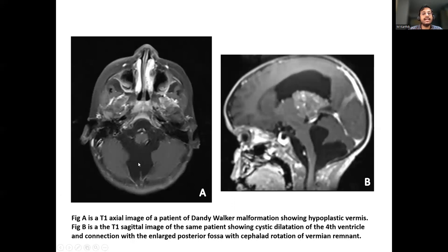A T1 axial image of a patient with Dandy-Walker malformation shows a hypoplastic vermis. Figure B is a sagittal T1 image of the same patient showing cystic dilatation of the fourth ventricle with connection to the enlarged posterior fossa and cranial rotation of the remnant of the vermis.